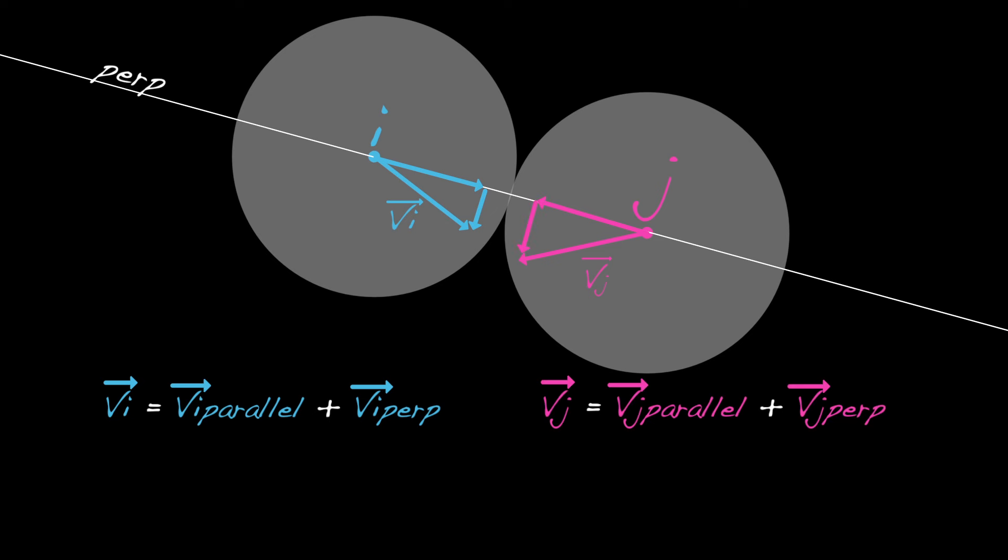The only force acting on the particles during the collision is along the line ij. As before, since no force is acting in the parallel direction, the velocities in the parallel directions won't change.